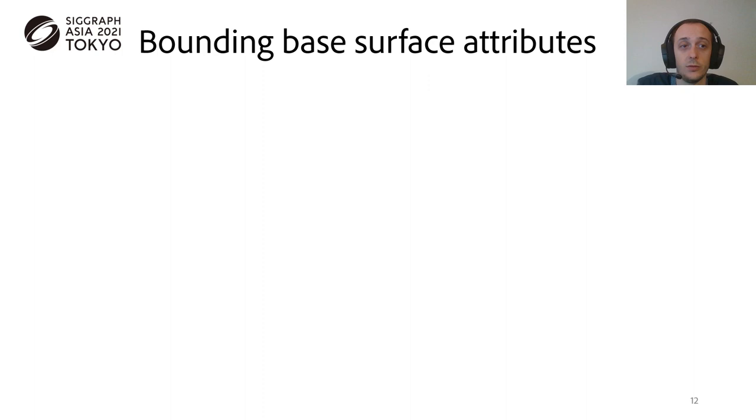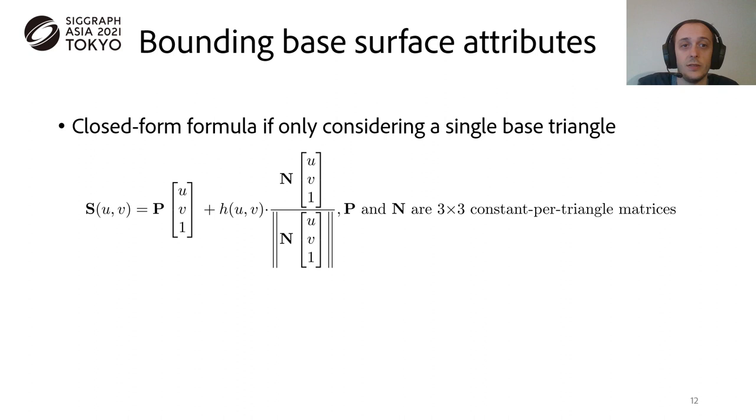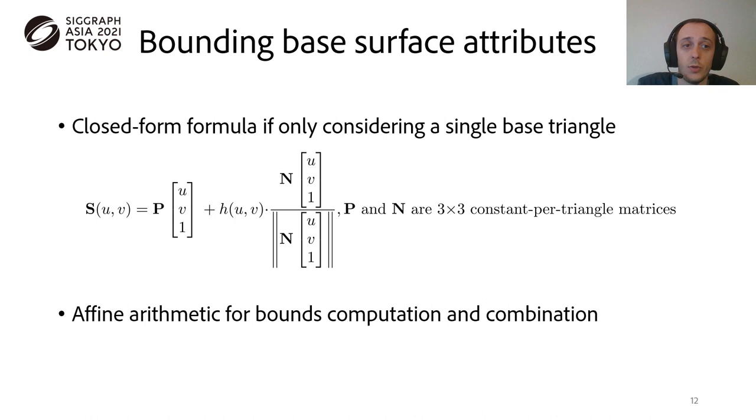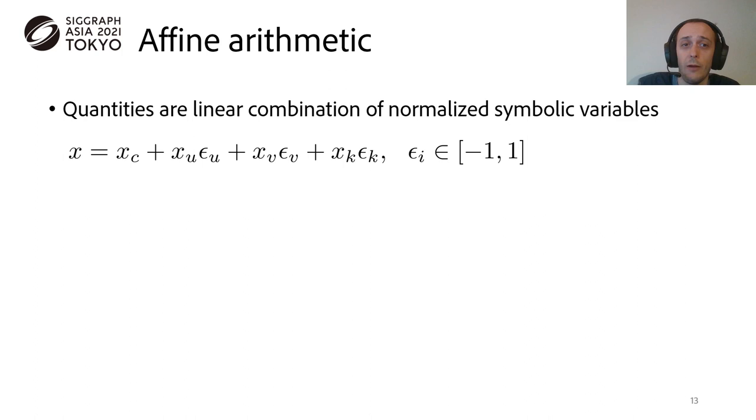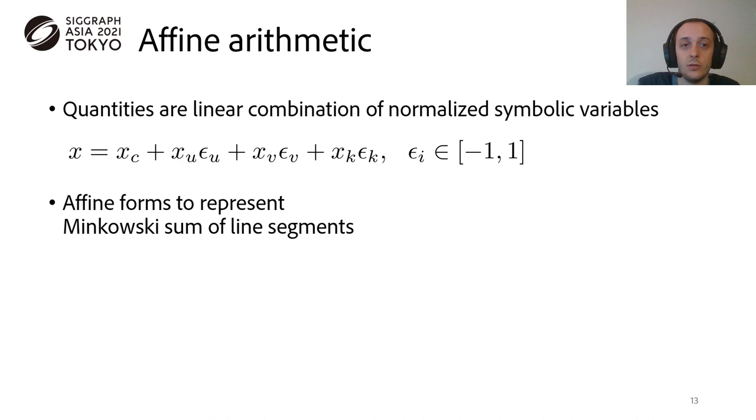Going back to the base surface, we will now focus on a single displaced base triangle. The reason for that is that both the position and normals have simple closed-form formulas, as they are typically just interpolated between the three vertices of the base triangle. Since these computations are arithmetic in nature, we will use the affine arithmetic as a tool, for both computing the bounds and combining the bounds. So, in affine arithmetic, quantities, instead of being just scalar or vectors, are instead a linear combination of symbolic variables which can only take values between the minus one and ones. More formally, these affine forms represent Minkowski's sums of line segments in a vector space.